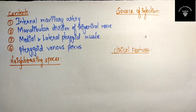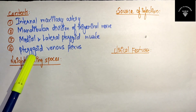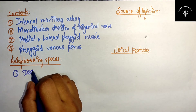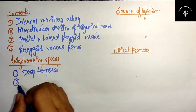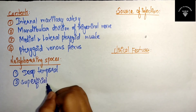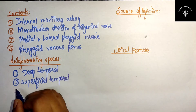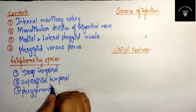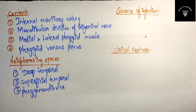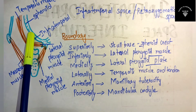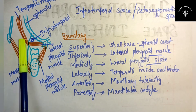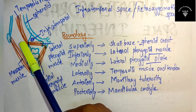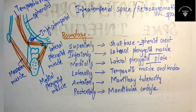The neighbouring spaces of the infratemporal space are: deep temporal space, superficial temporal space, pterygomandibular space, and also the submasseteric space. These are the neighbouring spaces of the infratemporal space.